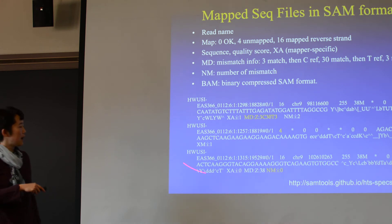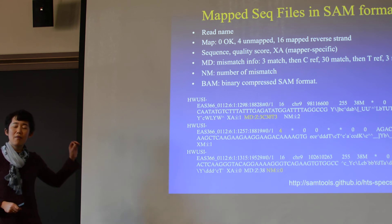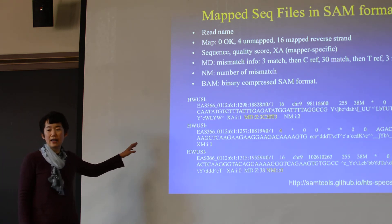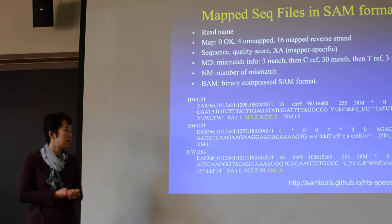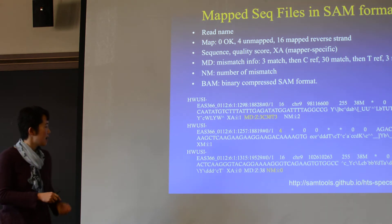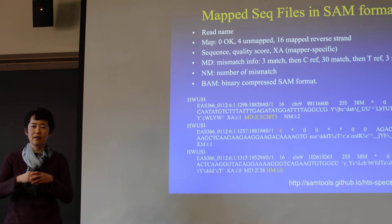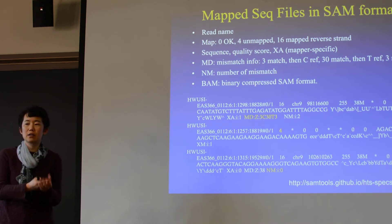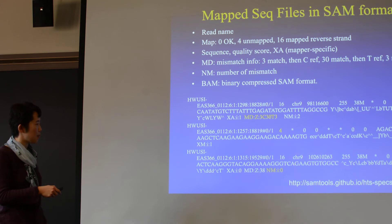This SAM file actually captures the sequence, the sequence quality, and where it matched in the genome. It's the file you will likely need to use for many sequencing applications. You can also convert it into a binary format — that's the BAM file. It's smaller, and if you uncompress it, it becomes the same SAM format.